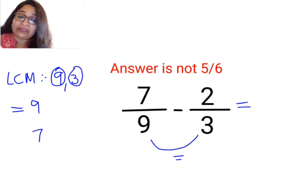So now your question is 7 upon 9 will remain as it is and 2 upon 3, I want to convert this 3 in terms of 9. Now what do I do? I need to multiply the denominator by 3.